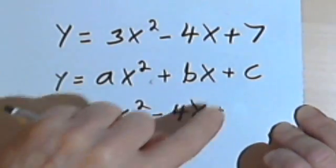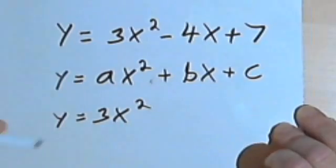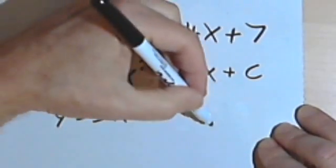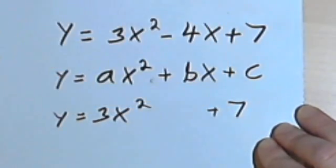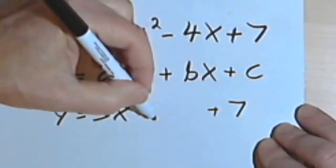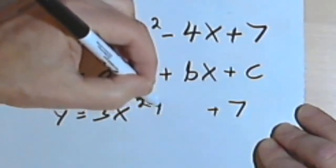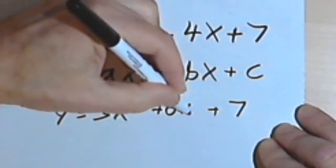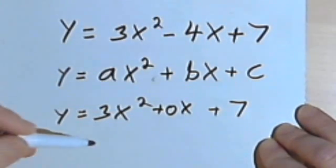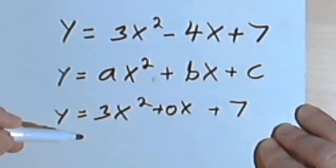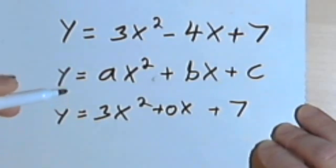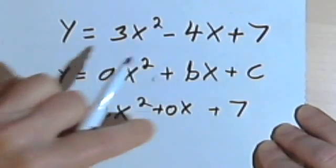Or, what if I just had y equals 3x squared plus 7? Well, that's like saying that the b was zero. So I could plug in 0x to put it into standard form. You could probably do that mentally, you might not want to write something like that and hand it in as your homework.